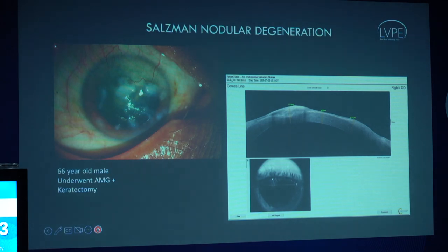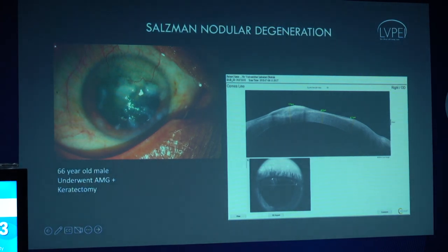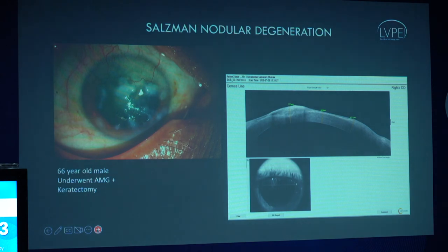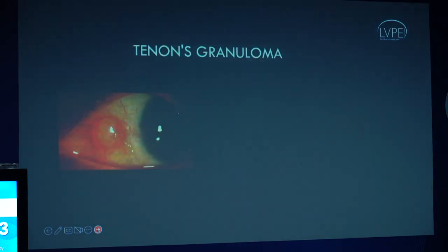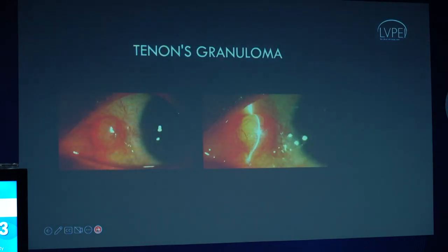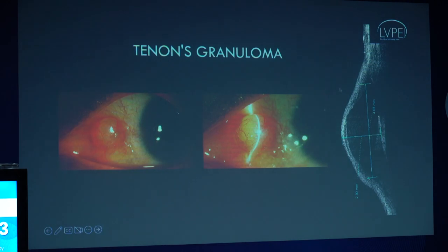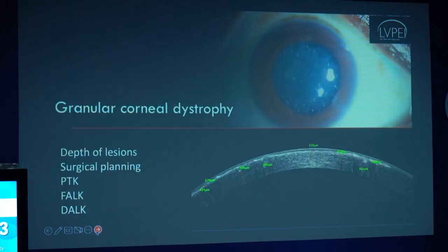Other benign lesions on the surface of the cornea include Salzmann nodular degeneration. You can see these gelatinous lesions, and on OCT they have a clear plane of demarcation from the underlying stroma; they do very well post superficial keratectomy. Another important lesion is the suture granuloma, where you can see a clear cystic space with back-shadowing.